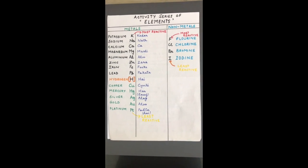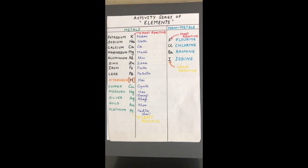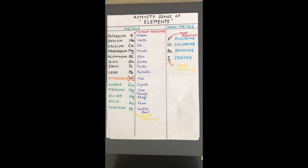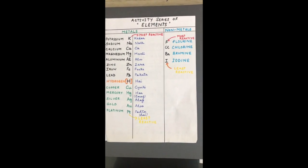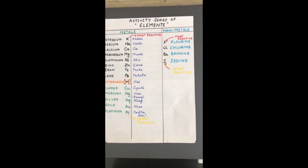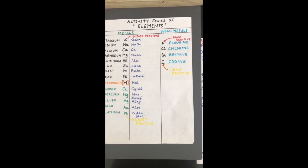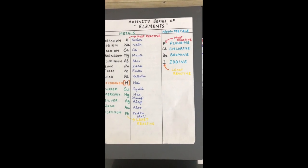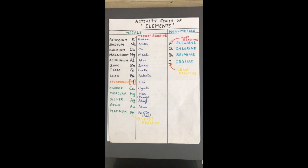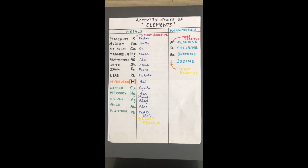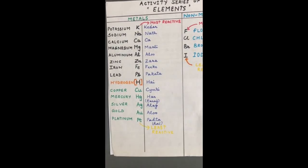Metals beginning with potassium till platinum are arranged in the order of decreasing reactivity. Nonmetals beginning with fluorine and ending with iodine have been arranged in the order of their decreasing reactivity. Fluorine is the most reactive nonmetal and iodine is the least reactive nonmetal. Potassium is the most reactive metal and platinum is the least reactive metal. Now let us study the entire activity series and try to learn it.